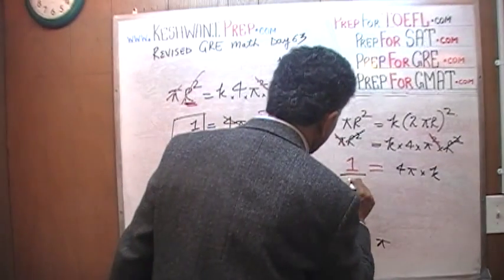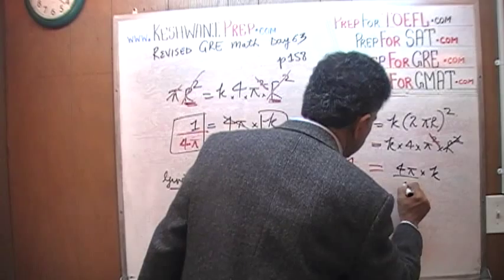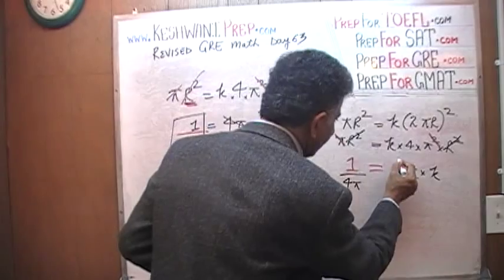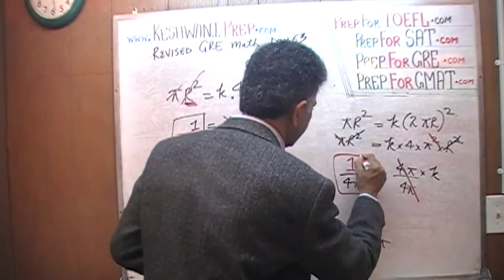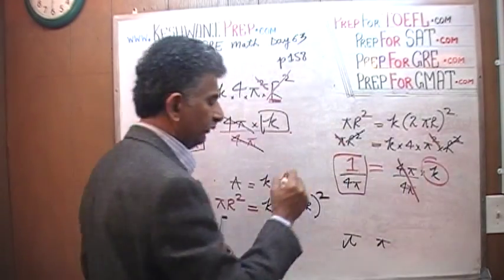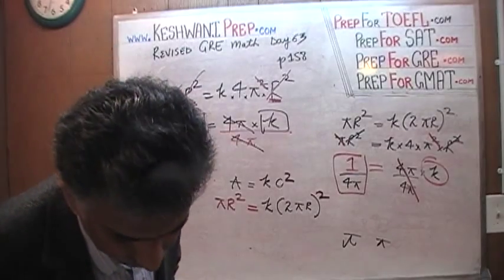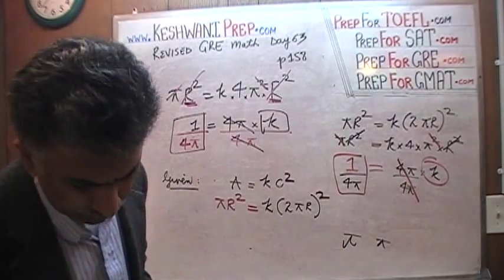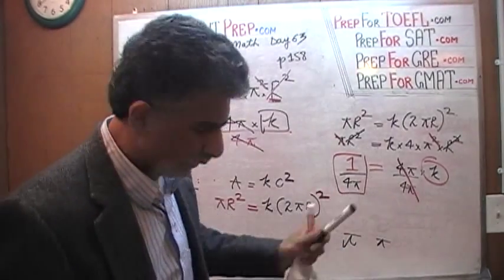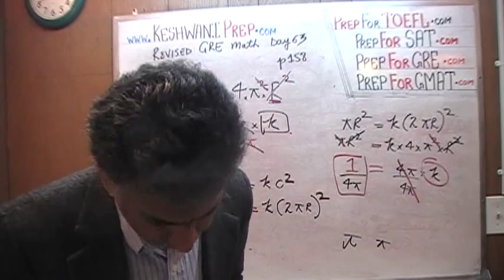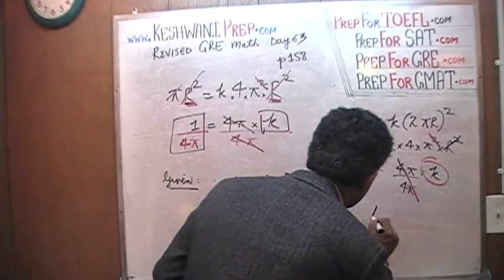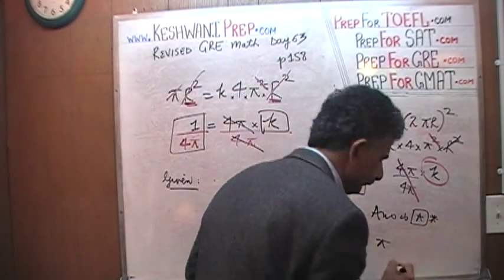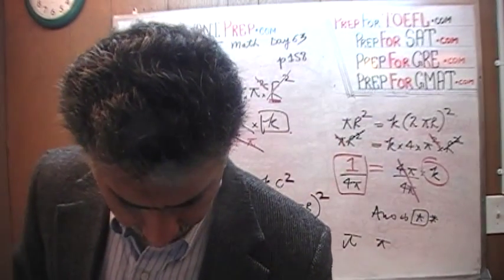All the baby steps are gone, and what we are left with is: 1 equals 4 times pi times k. Divide both sides by 4 pi. If you divide both sides by 4 pi, this 4 pi drops out, and there is your k. k equals 1 over 4 pi. And the answer is choice 8. That's it, that's all. We are done with that one.